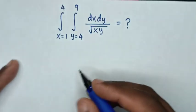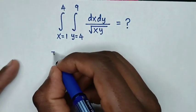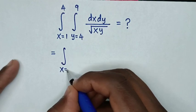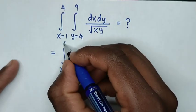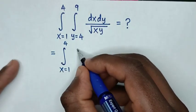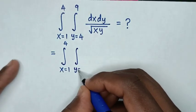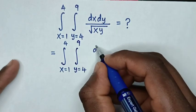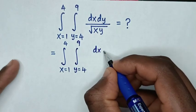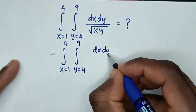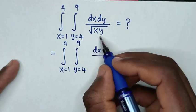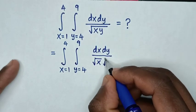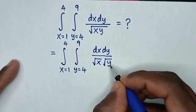Hello. The integration of this problem will be equal to the integral from x equals 1 up to 4, integral from y equals 4 up to 9, then dx dy over square root of xy, which is the same as square root of x times square root of y.